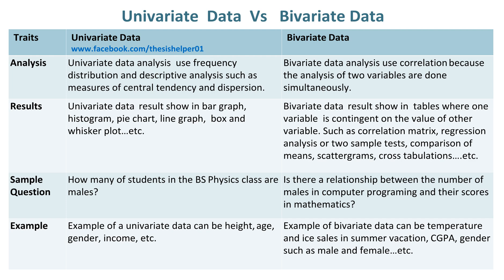Examples of Univariate Data include height, age, gender, income, etc. Whereas, examples of Bivariate Data include temperature and ice sales in summer vacation, CGPA and gender such as male and female, etc.